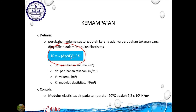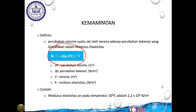Secara prinsip, satu variabel dalam satu persamaan pasti bisa dicari. Variabel yang tidak diketahui hanya satu, dan kita memiliki satu persamaan, maka ΔV ini bisa kita cari. Jadi kembali ke soal tadi.